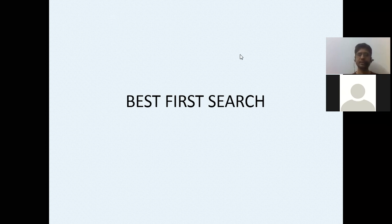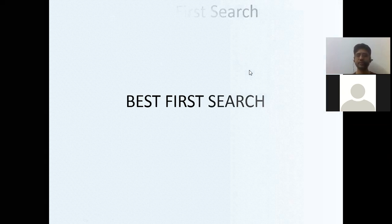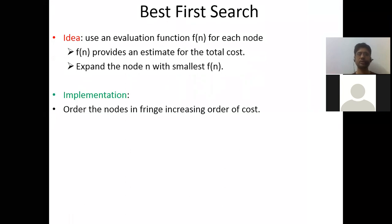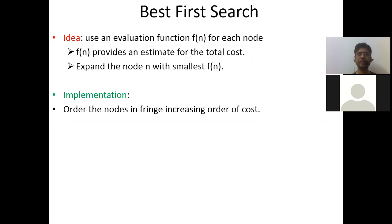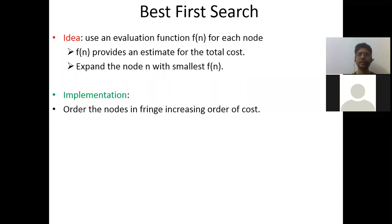We were discussing best first search, which has two variations: greedy best first search and the A* algorithm. The idea in best first search is we use an evaluation function f(n) for each node, which provides an estimate for the total cost, and we expand only the node with the smallest f(n). We can implement this by ordering nodes in the fringe in increasing order of cost using a priority queue.